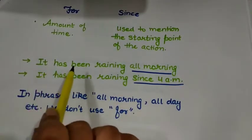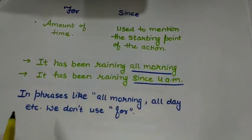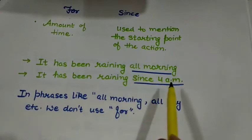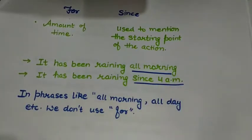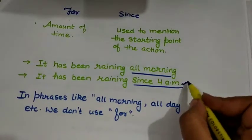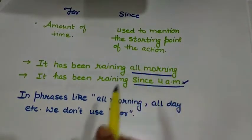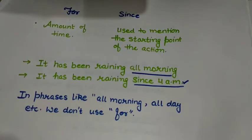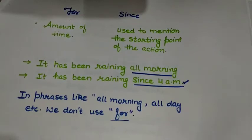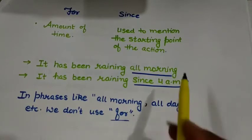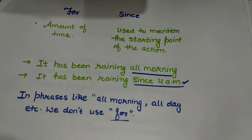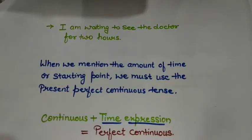Consider: 'It has been raining all morning,' or 'It has been raining since 4 am' — meaning the rain actually started at 4 am. With phrases like 'all morning' or 'all day,' we do not use 'for,' because the phrase itself already represents an amount of time. Using 'for' with such phrases makes the sentence superfluous, which is incorrect.